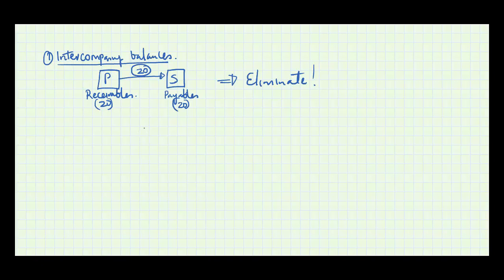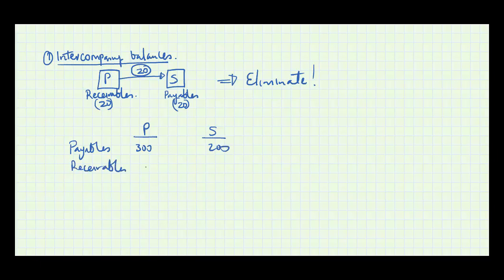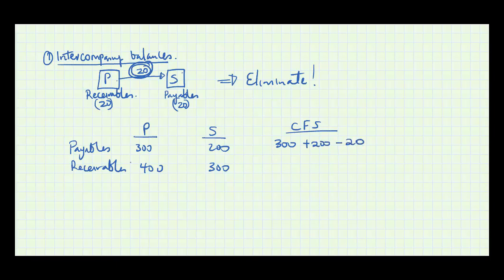In an exam scenario you'll have the books of the parent and the books of the subsidiary. Assuming a payables balance of 300 and 200, and a receivables balance of 400 and 300, and you're told there was an intercompany transaction of 20 — when preparing consolidated accounts, under payables you would say 300 plus 200 minus 20.